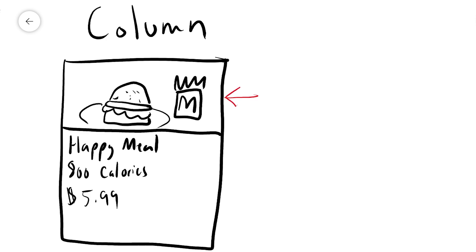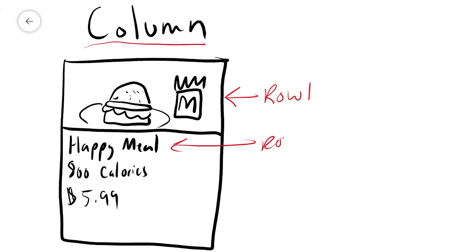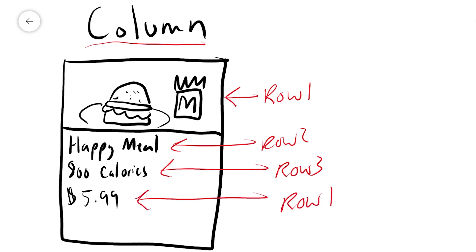The featured image at the top would be row number one. Then the title would be row number two, the 800 calories would be row number three, and the price would be row number four. Columns contain rows — that's how you always need to think about it. This is typically called a detail screen, and it's a very common layout pattern.